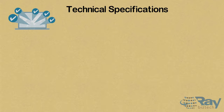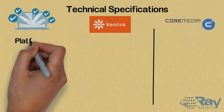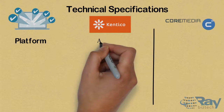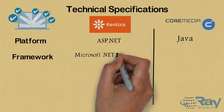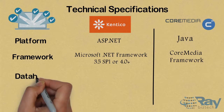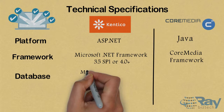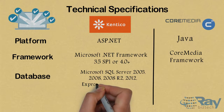Technical Specifications for Kentico and Core Media. Platform for Kentico: ASP.NET. Platform for Core Media: Java. Framework for Kentico: Microsoft .NET Framework 3.3 SP1 or 4.0. Framework for Core Media: Core Media Framework. Database for Kentico: Microsoft SQL Server.